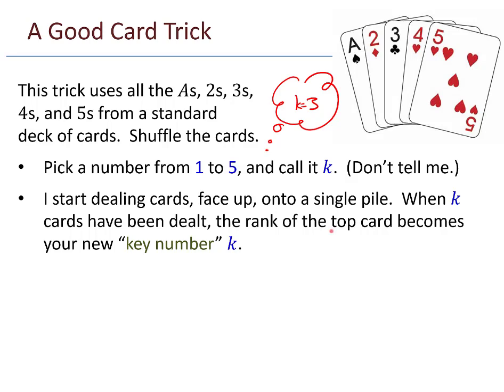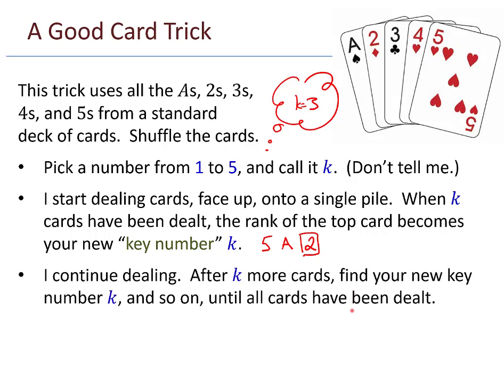I'm going to start dealing the cards face up onto a single pile. When K cards have been dealt, the rank of the top card becomes your new key number K. For example, let's say you think to yourself maybe the number 3. That becomes your K at the beginning. Let's say I start dealing the cards out, and the first card I put down is a 5, and then maybe an ace comes after that, and then a 2. So when that third card has been dealt, that becomes your new key number.